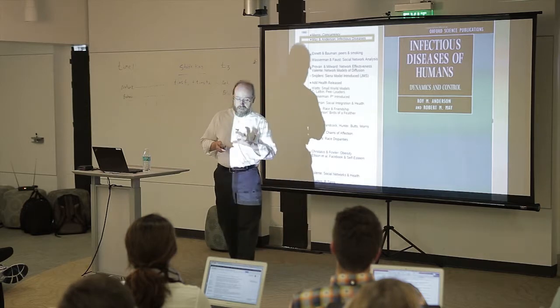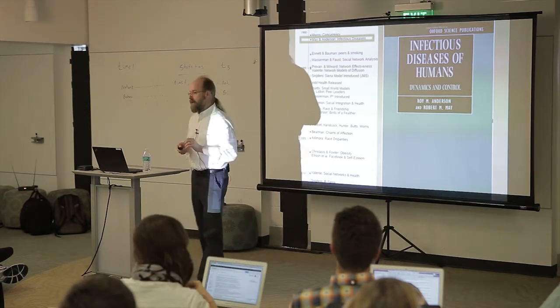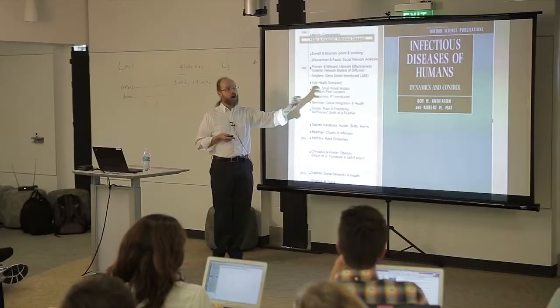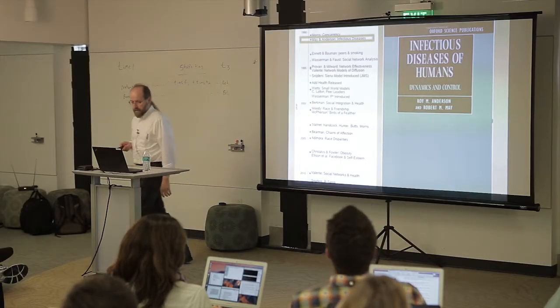This work was complemented with a really fundamental set of work in mathematical modeling. May and Anderson — anybody who's an epidemiologist in this room might shiver when they see this book. They were the early developers of compartmental models and differential equation models for generating these kinds of things, providing a very nice complement to the otherwise discrete models coming out of networks.